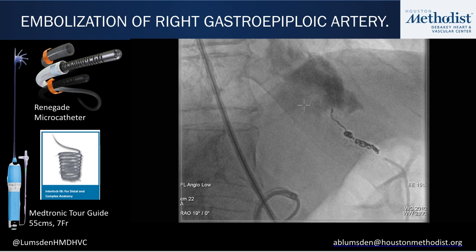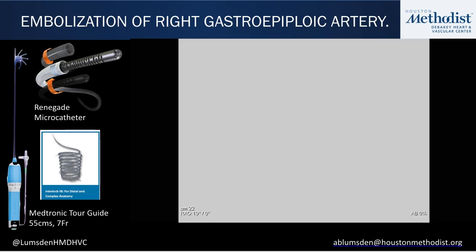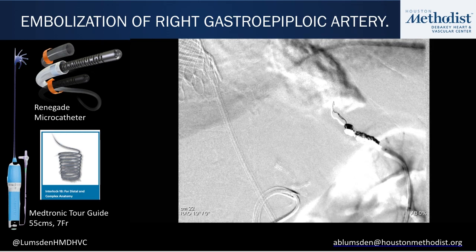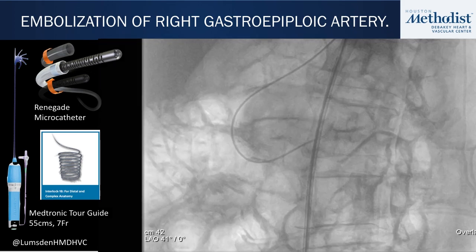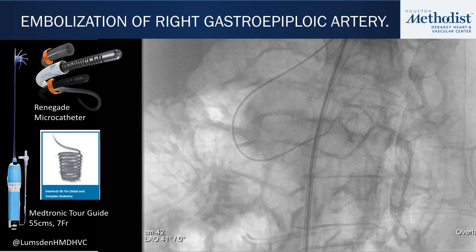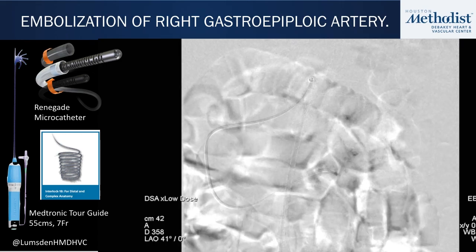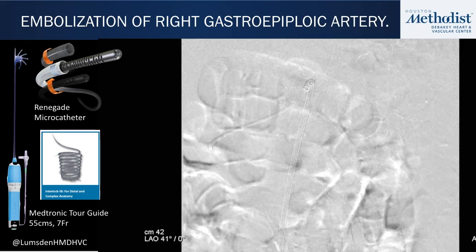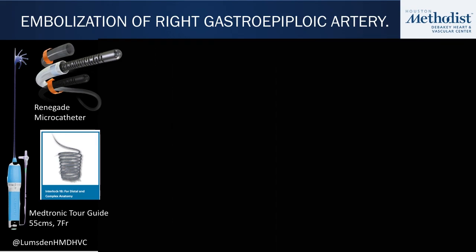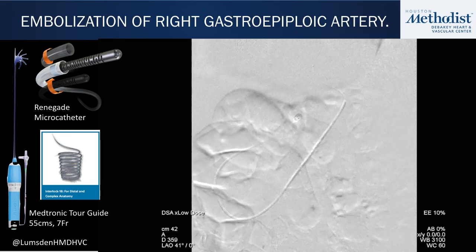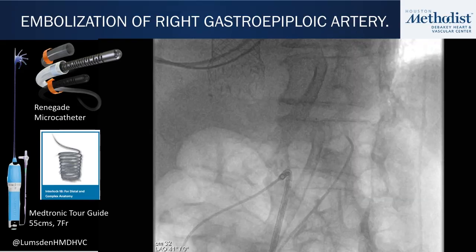In this situation, an educated guess worked. We used a combination of the Tourguide catheter, Interlock-18 coils, and the Renegade microcatheter. You can see the artery is occluded when we inject contrast. To run through this one more time: we tracked the artery from the celiac, advanced up the gastroepiploic, and then went ahead and embolized it.